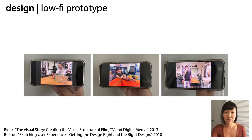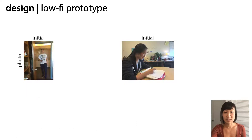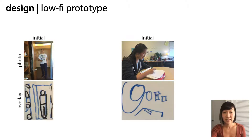We ran a Wizard of Oz study with 19 participants, where experimenters manually drew outlines on overlaid transparencies taped to the phone. Here are two photos taken by our participants. We instructed them each to frame a photo of a person interacting with an object of their choice. Once they took their initial photo, experimenters outlined the objects in the photo on a transparency, shown below. We then gave the phone back to the user, displaying the photo with a transparency overlay, and asked them to take another version of the photo.